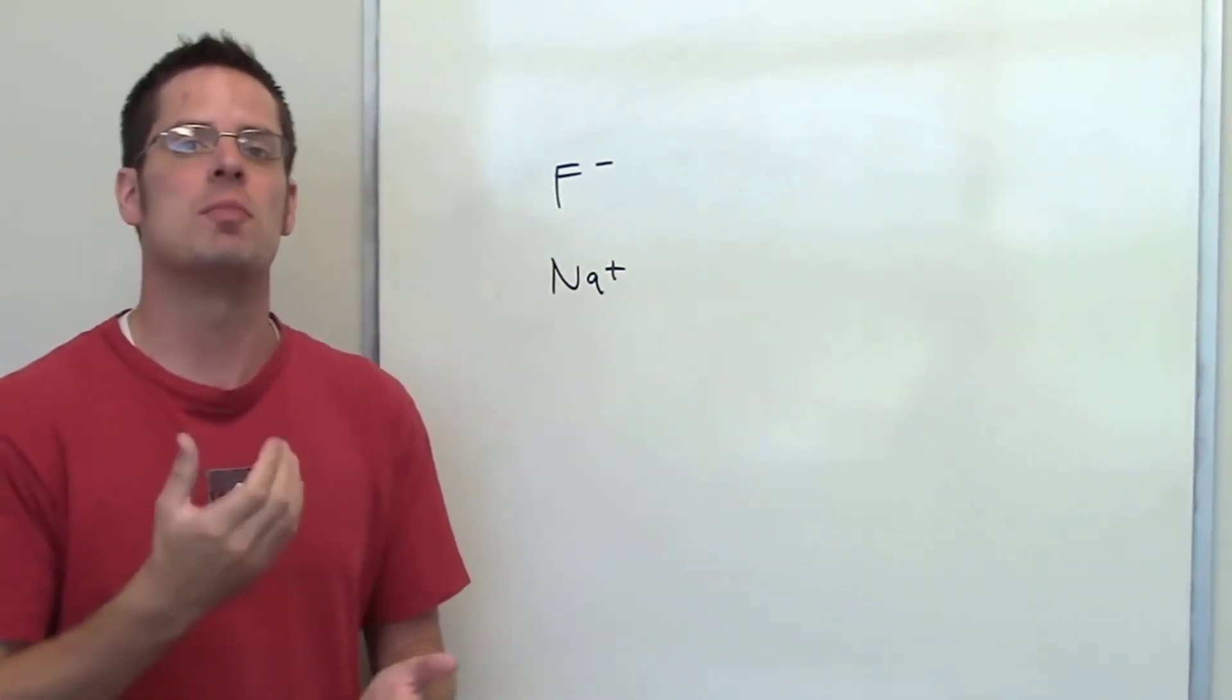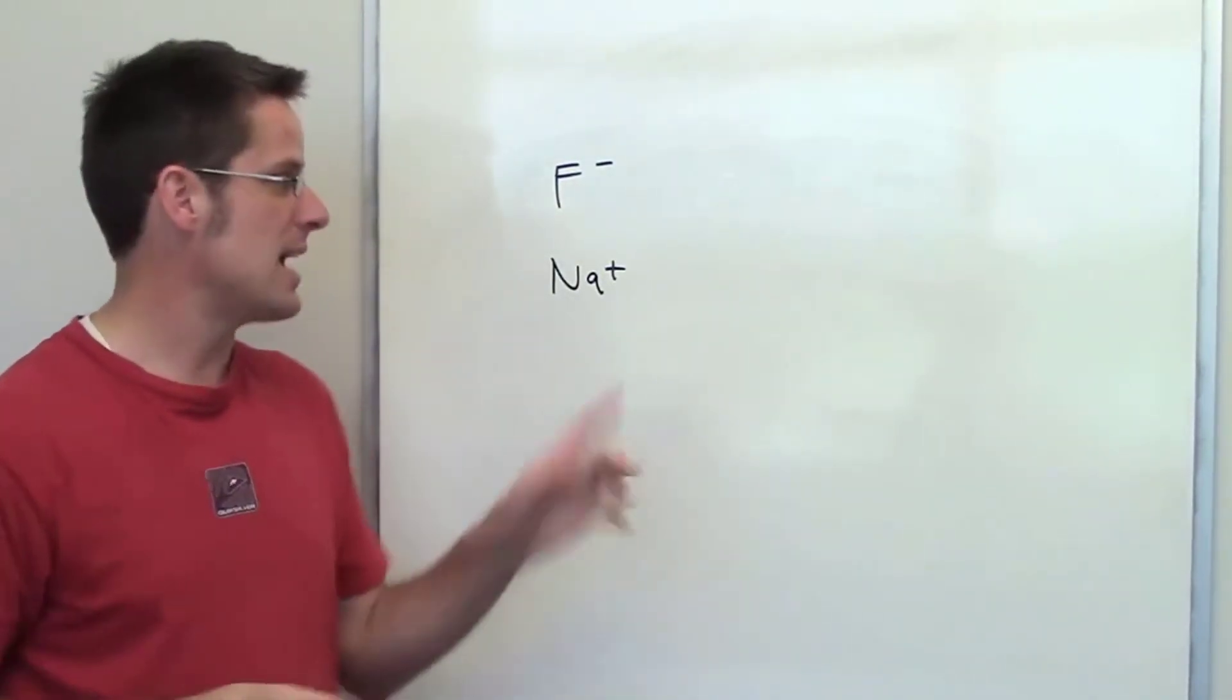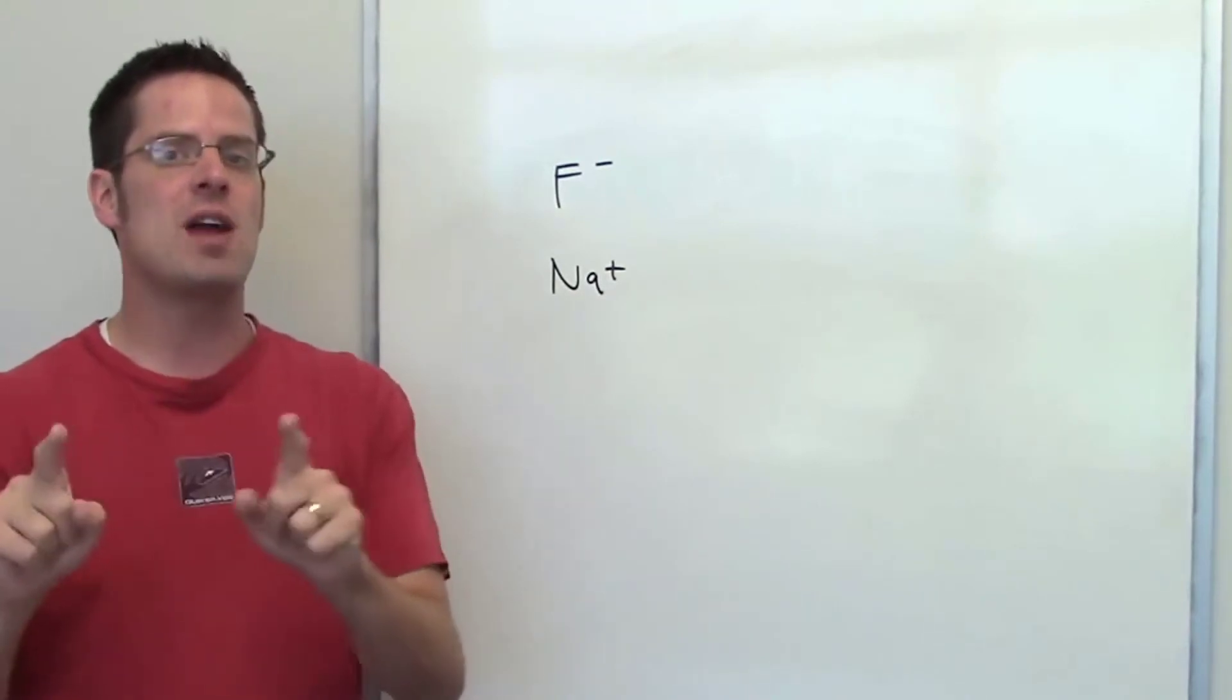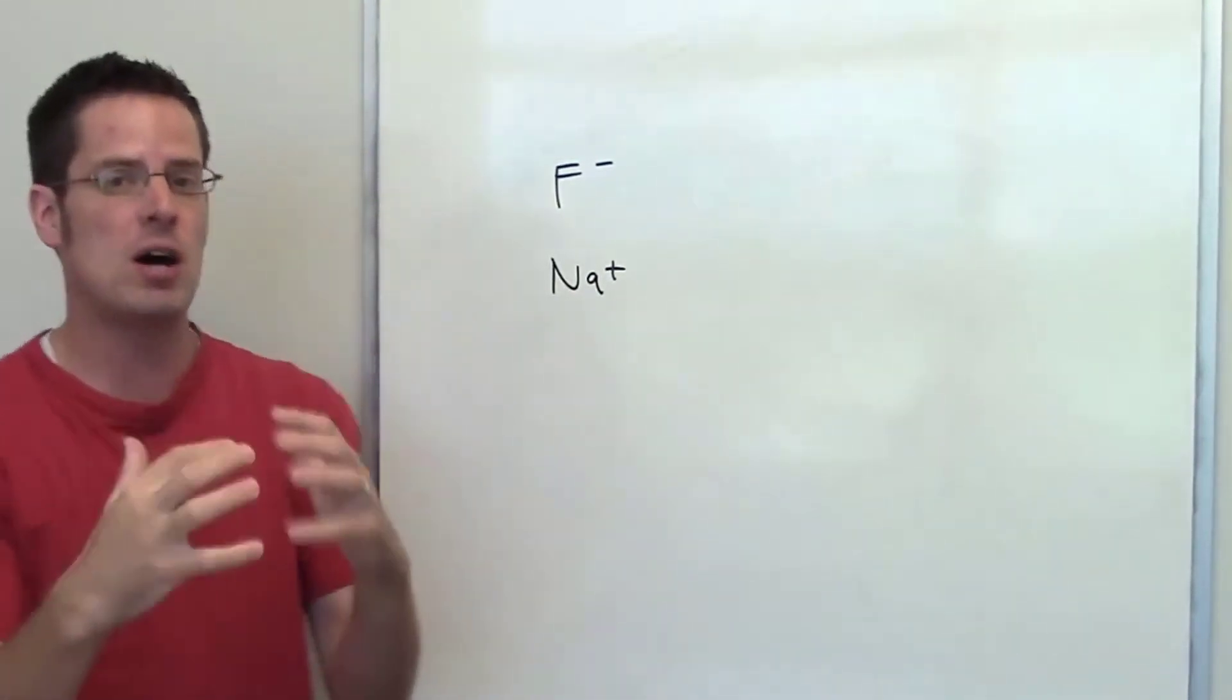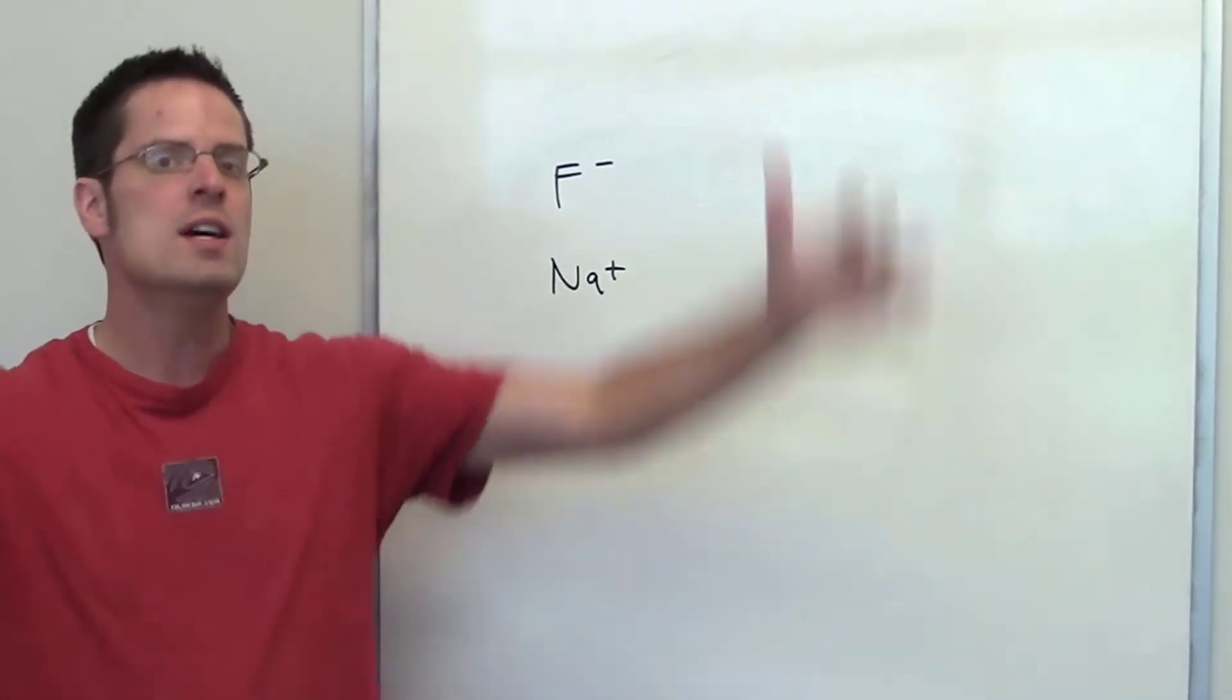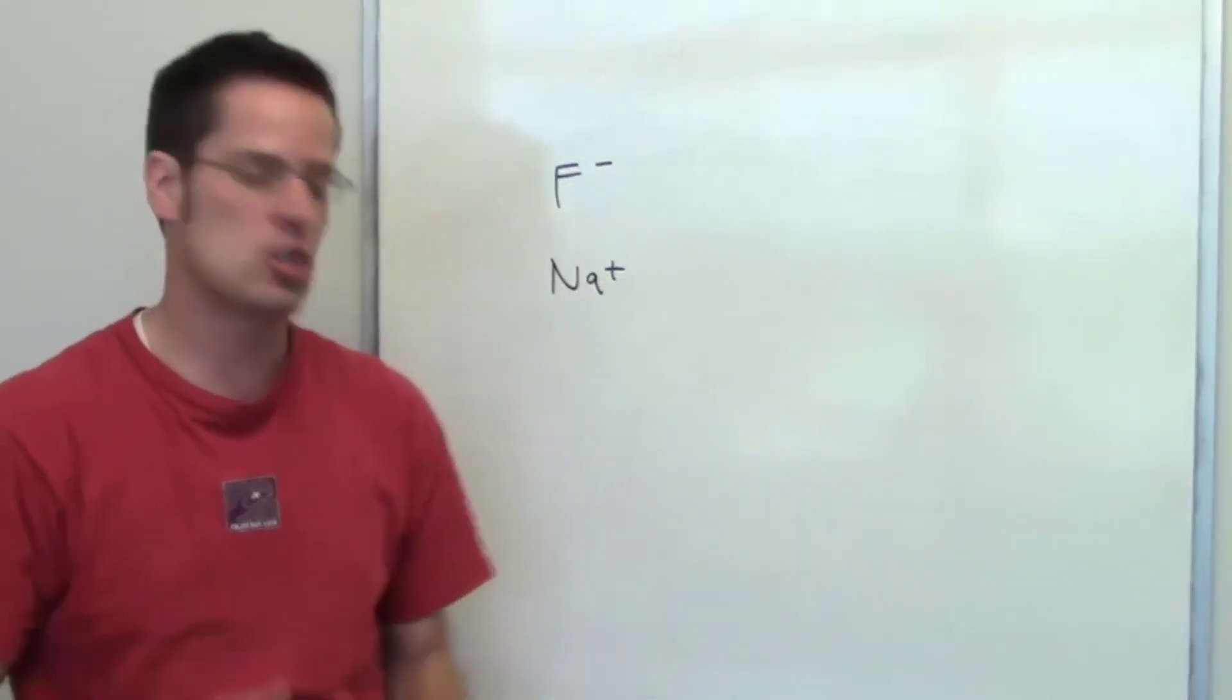The answer comes down to the number of protons. If I have two atoms and they have the same number of electrons, as is the case here, then whichever atom has more protons in its nucleus is going to have a stronger positive charge in its core to suck those electrons in, thereby making the element smaller.